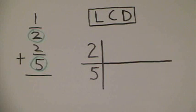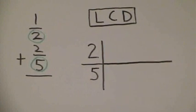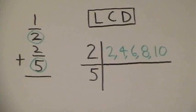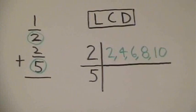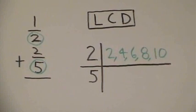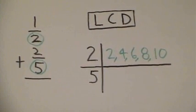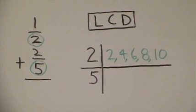Once again, we need to find an LCD or least common denominator for two and five. The first thing we do is list the first four or five multiples for two. Next, we list the first four or five multiples for five.